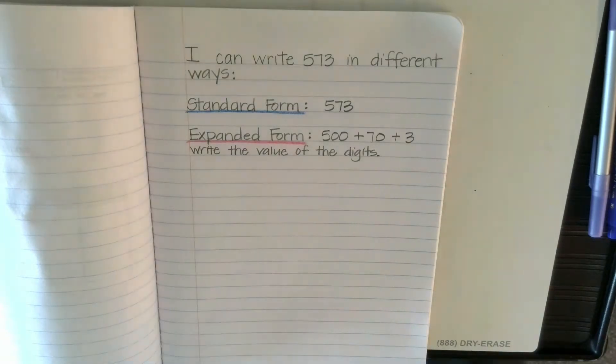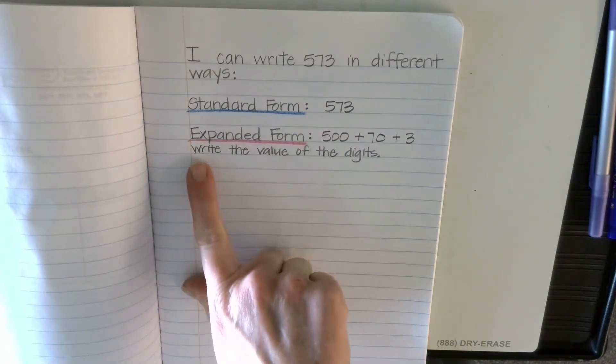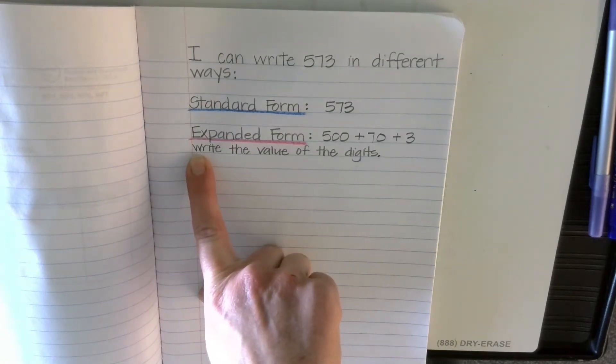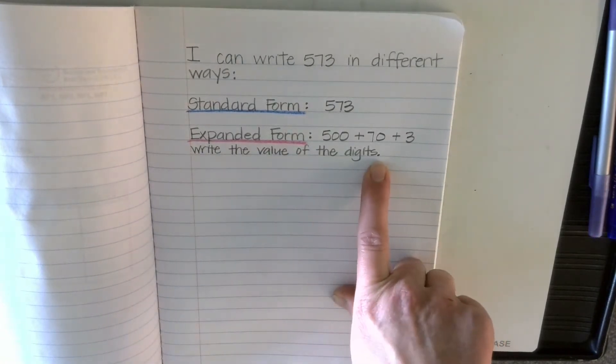Remember, if I'm going too fast, you can always hit pause. Make sure your sentence here, write the value of the digits, make sure it starts with a capital letter and it ends with a period. Now I'm going to skip another line.